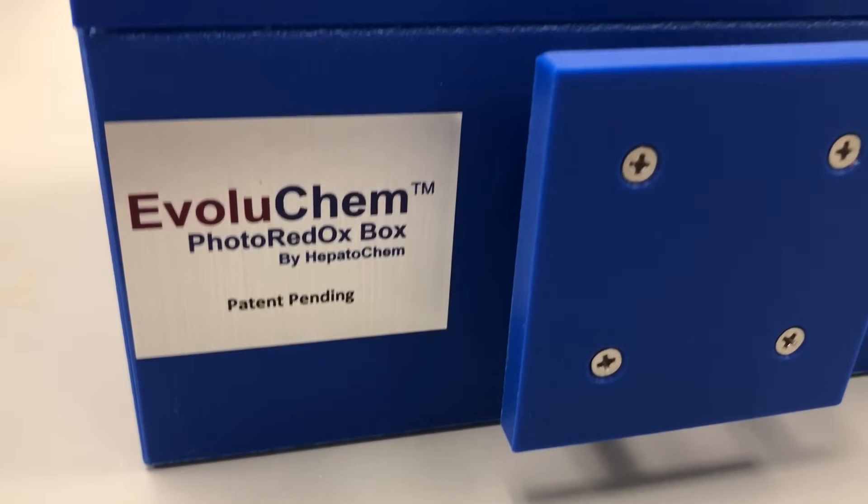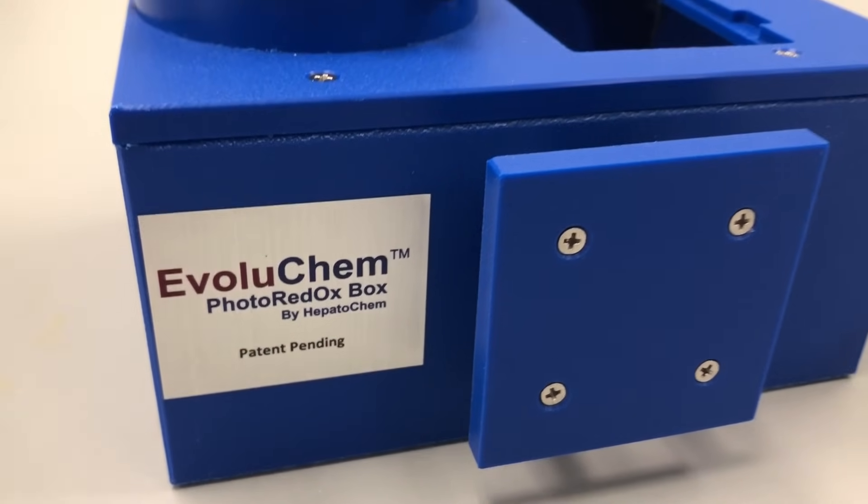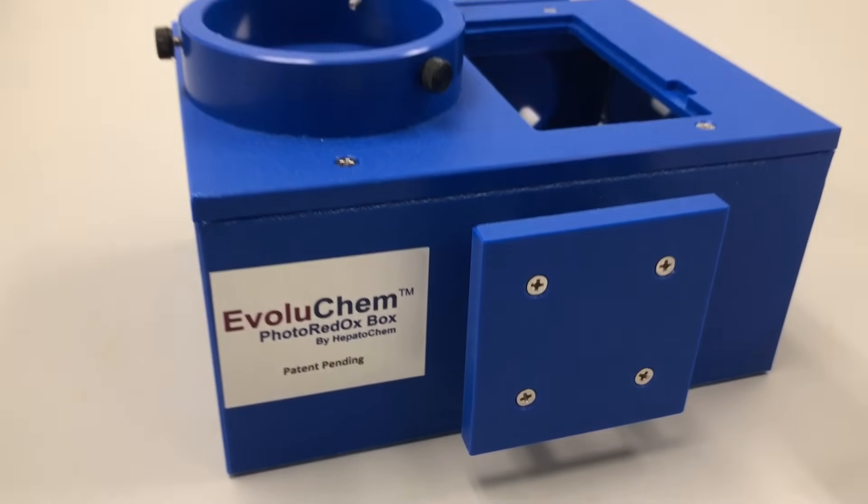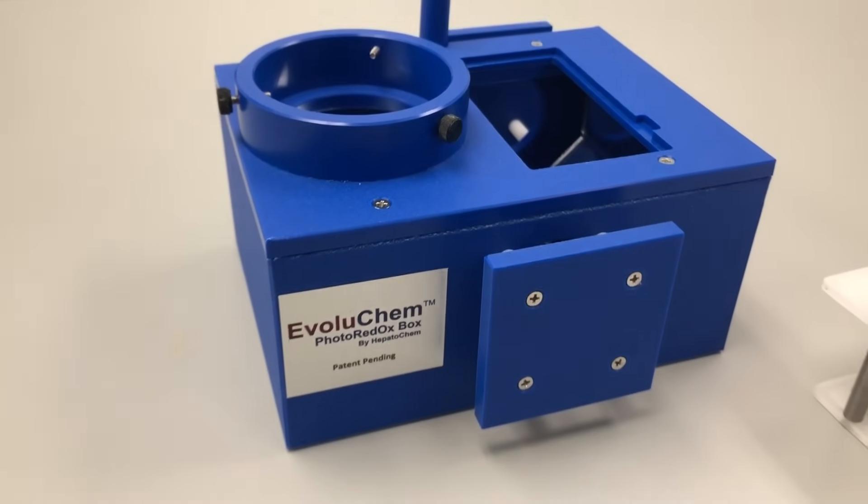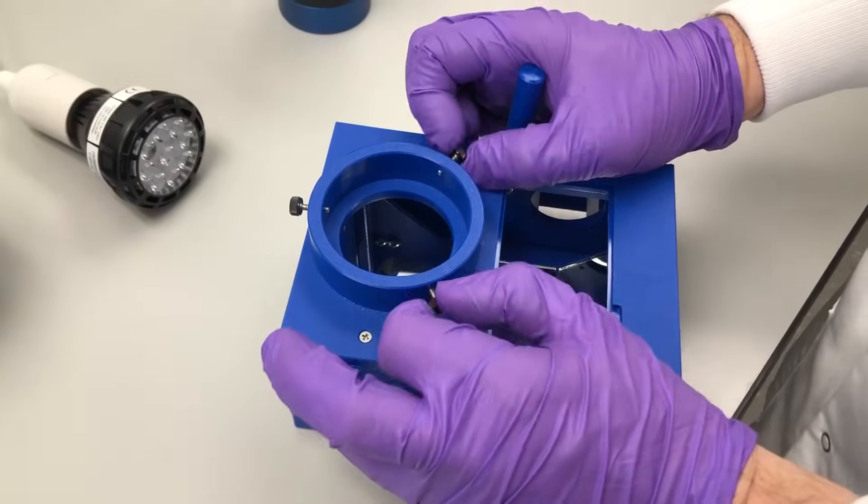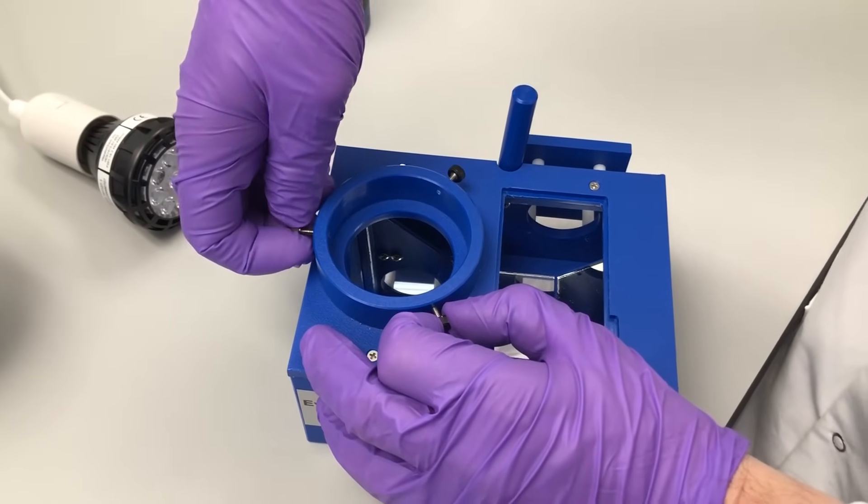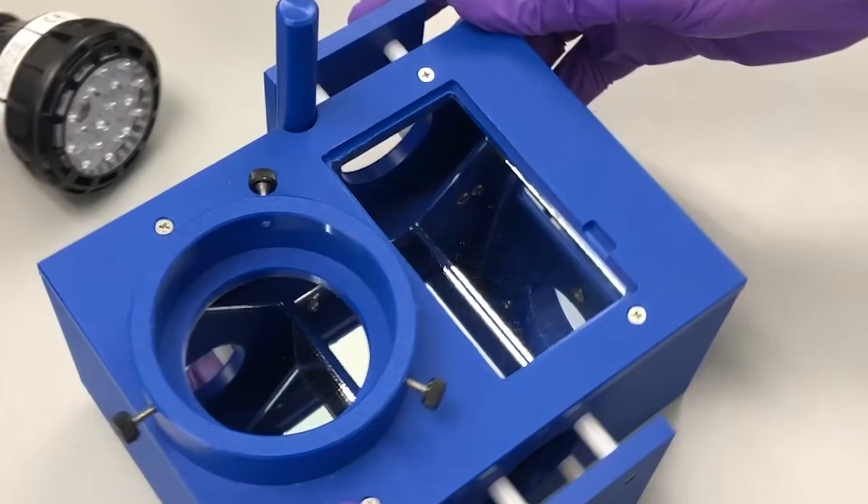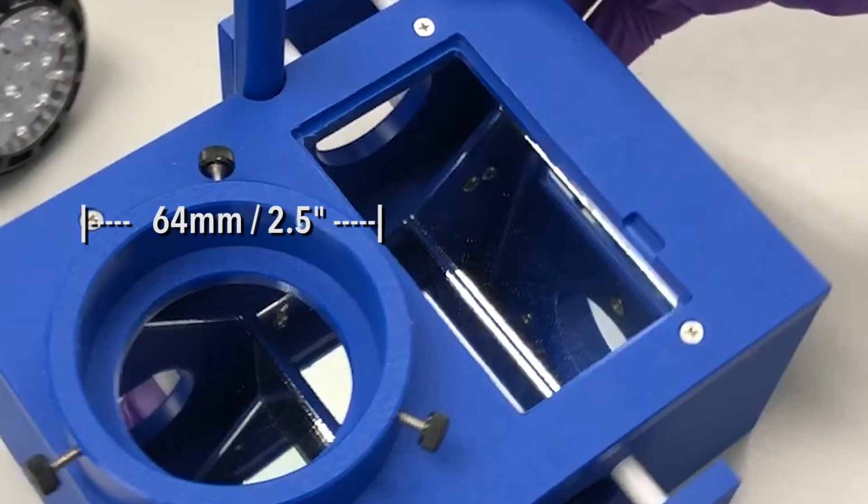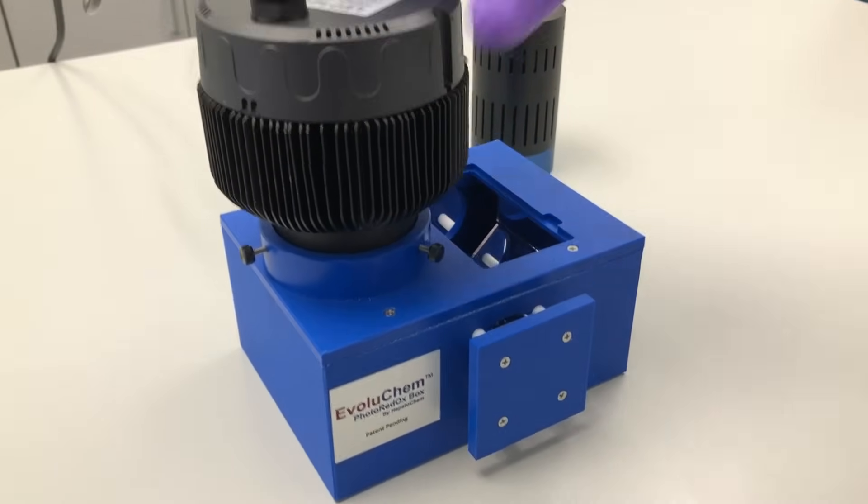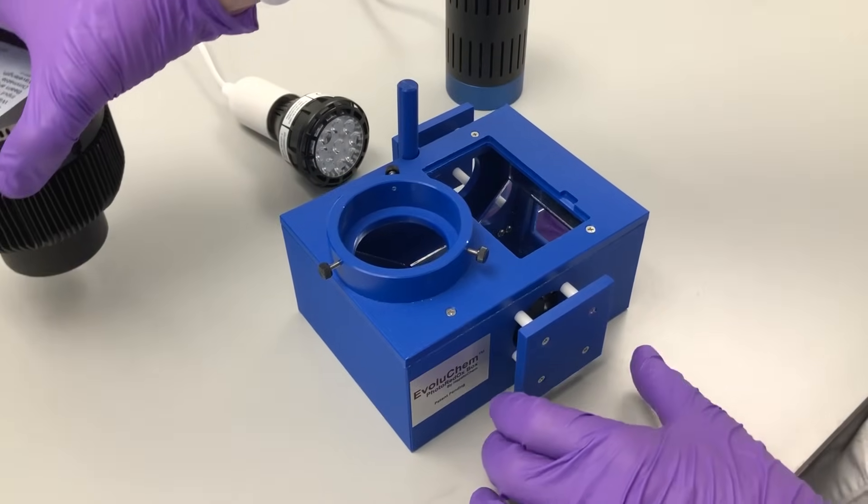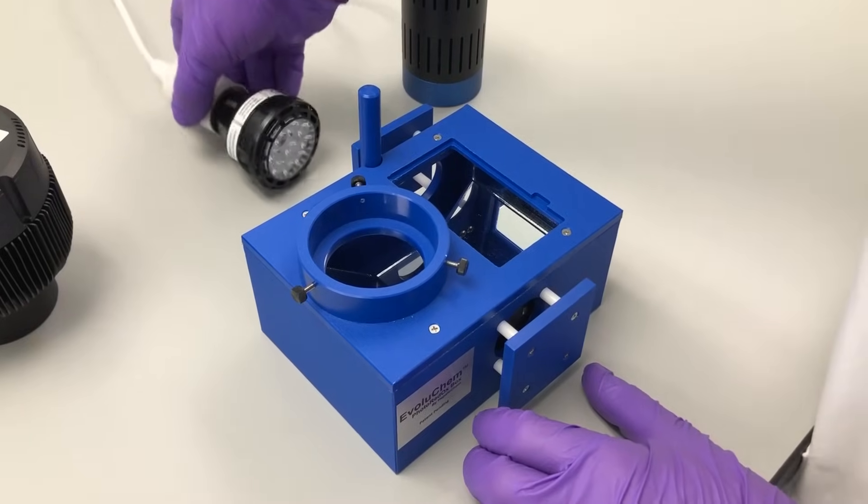EvoluChem photoreactors have been engineered with a universal light source mount and optimized to ensure easy switching of multiple light sources. The mount is fitted with three adjustable screws to hold light sources that are smaller in diameter than the 64 millimeter or two and a half inch mount cylinder or are too light to stay in position on their own. Do not over tighten the screws to avoid damaging your light source's housing.